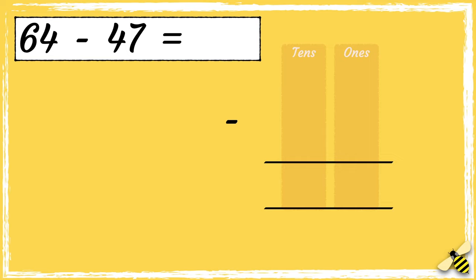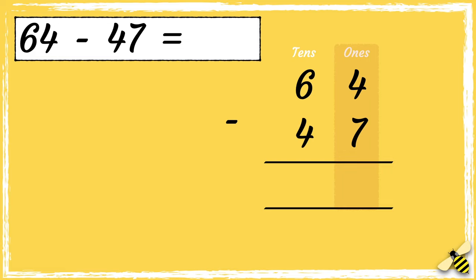Remember, we need to line our numbers up correctly. The number 64 has six tens and four ones. The number 47 has four tens and seven ones.